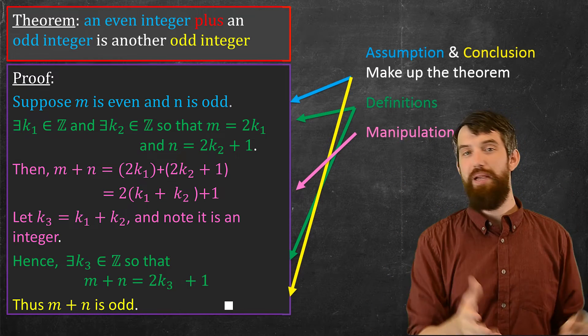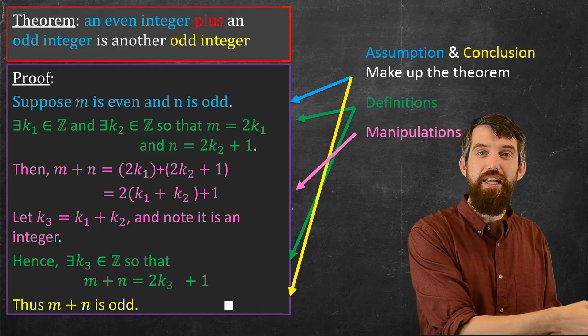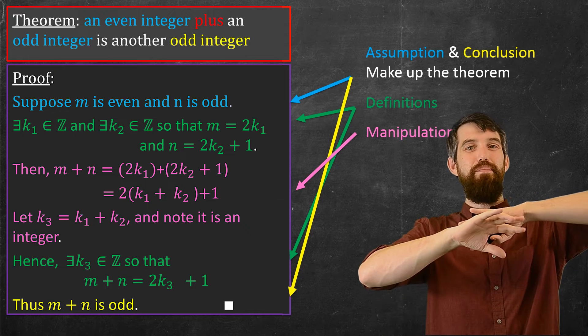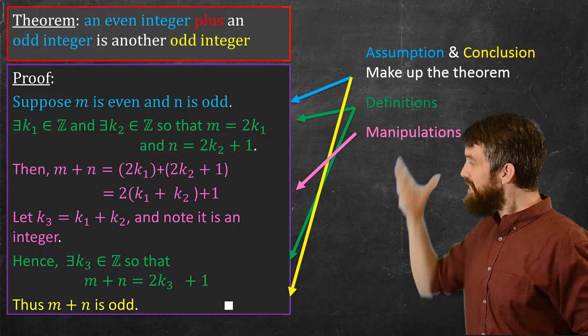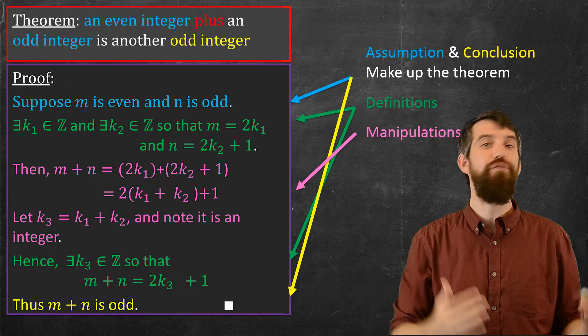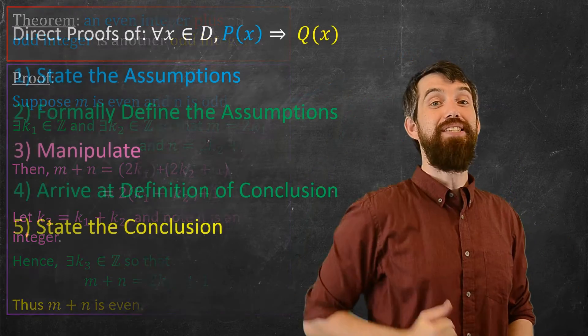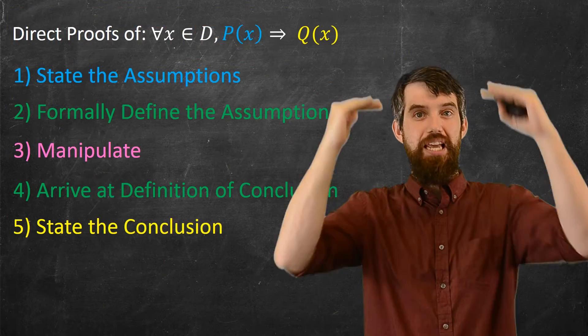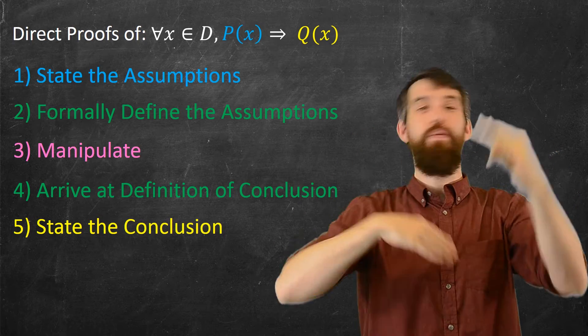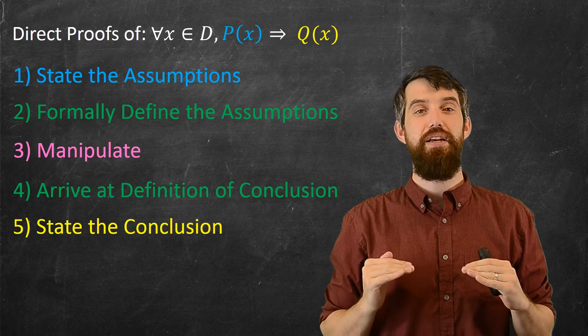And then the pink stuff in the middle, the pink is my manipulations. In this case, I took a sum, I plugged the definitions in, I factored out the 2, I defined the k3. That's sort of the body of the proof. So this basic structure that I have here, it repeats itself in proof after proof after proof. That you're going to have this five-step process, where you state the assumption, you state the definition of the assumption, you do a bunch of manipulations, you get to the definition of the conclusion, and finally you state the conclusion.